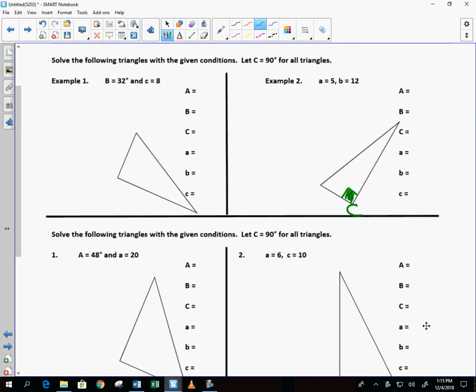So in this example, it says A is 5, so I would say that A would be the shorter side. Would you agree? So this would be angle A, and then B would be the longer side, so I'll call this angle B. So we have 5 for side A, we have 12 for side B.